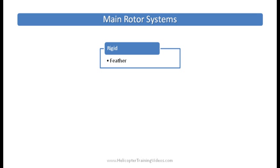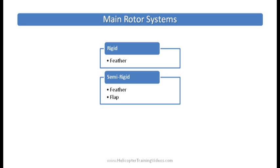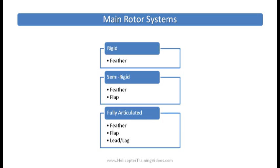So now you understand the different ways a blade can move, let's talk about the three main rotor systems. In a rigid rotor system, the blades independently feather. In a semi-rigid rotor system, they feather and flap. And in a fully articulated rotor system, they independently feather, flap, and also lead lag. We'll go through examples of each in a little bit more detail.